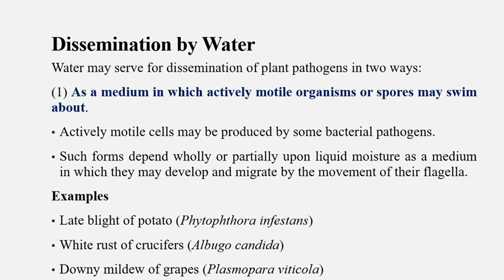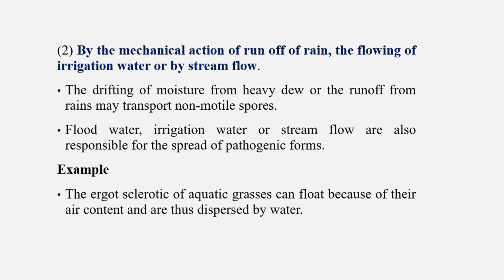Examples include late blight of potato caused by Phytophthora infestans, white rust of crucifers caused by Albugo candida, and downy mildew of grapes caused by Plasmopara viticola. The second way is by the force of rain, the flowing of irrigation water, or by stream flow, which disperses plant pathogens.